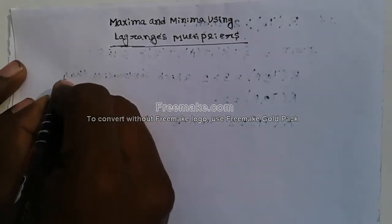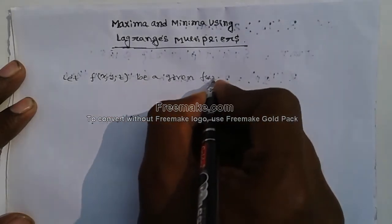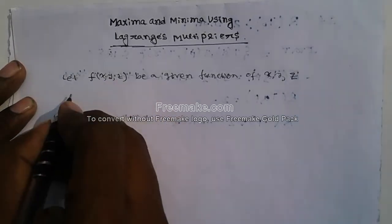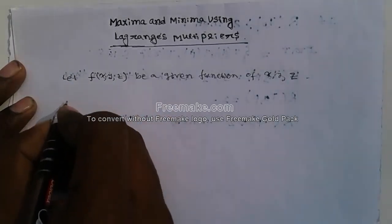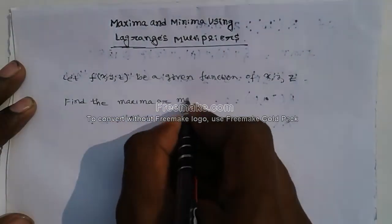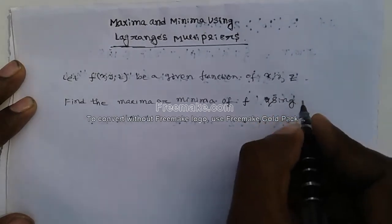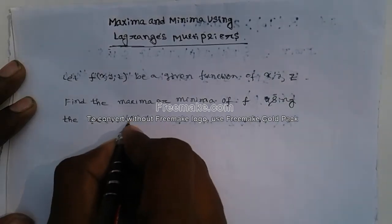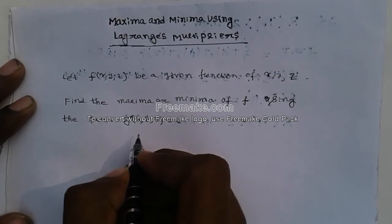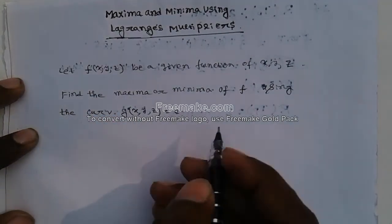Let f(x, y, z) be a given function of variables x, y, and z. The question is: find the maxima or minima of f subject to the constraint g(x, y, z) equal to some constant c, where g is another function of x, y, z.